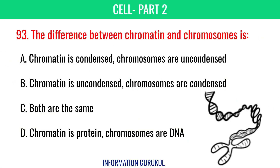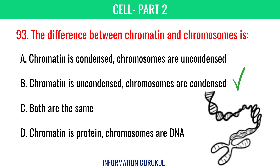The difference between chromatin and chromosomes is that chromatin is uncondensed while chromosomes are condensed.